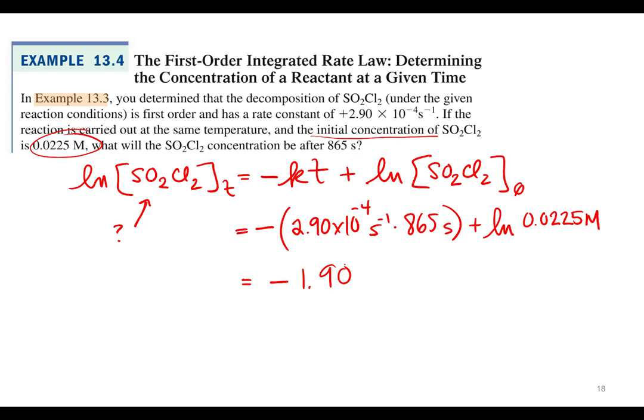So this is a negative 1.90. Well it turns out, is that our concentration? No. It's a natural log of our concentration. So we need to solve a little bit more. We need to calculate a little bit more. So basically I need to get rid of this natural log. How do I get rid of the natural log?